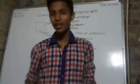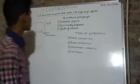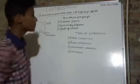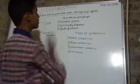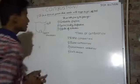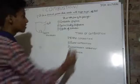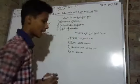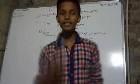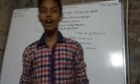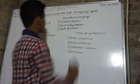Combustion is a chemical process that reacts with oxygen to give off heat. It can take place by three things. The first is a combustible substance — any substance which undergoes combustion is called a combustible substance.